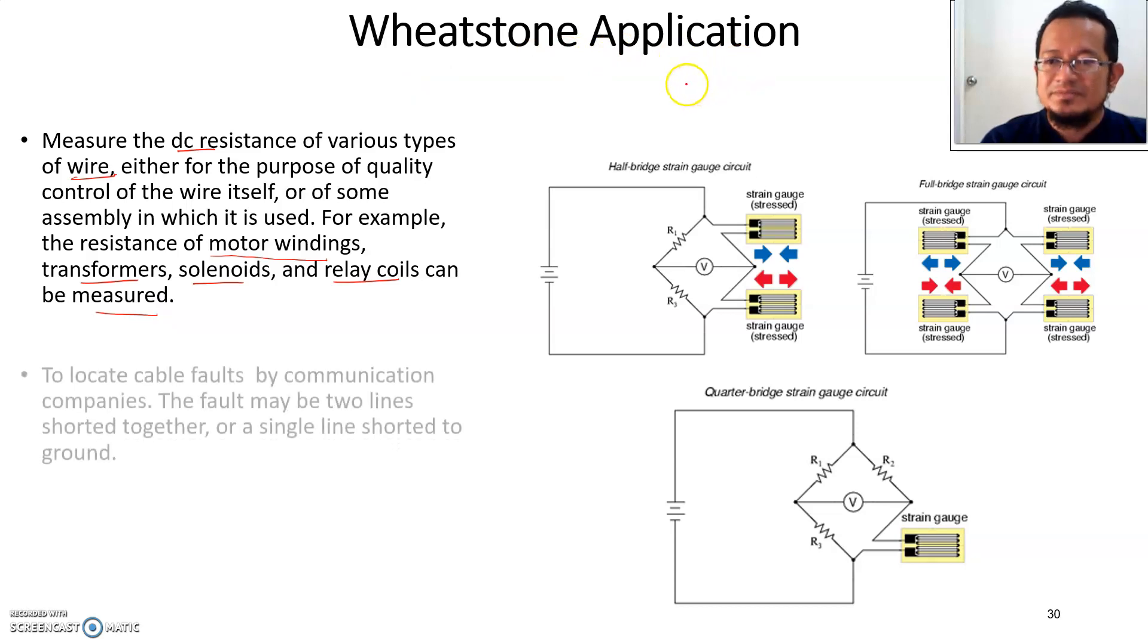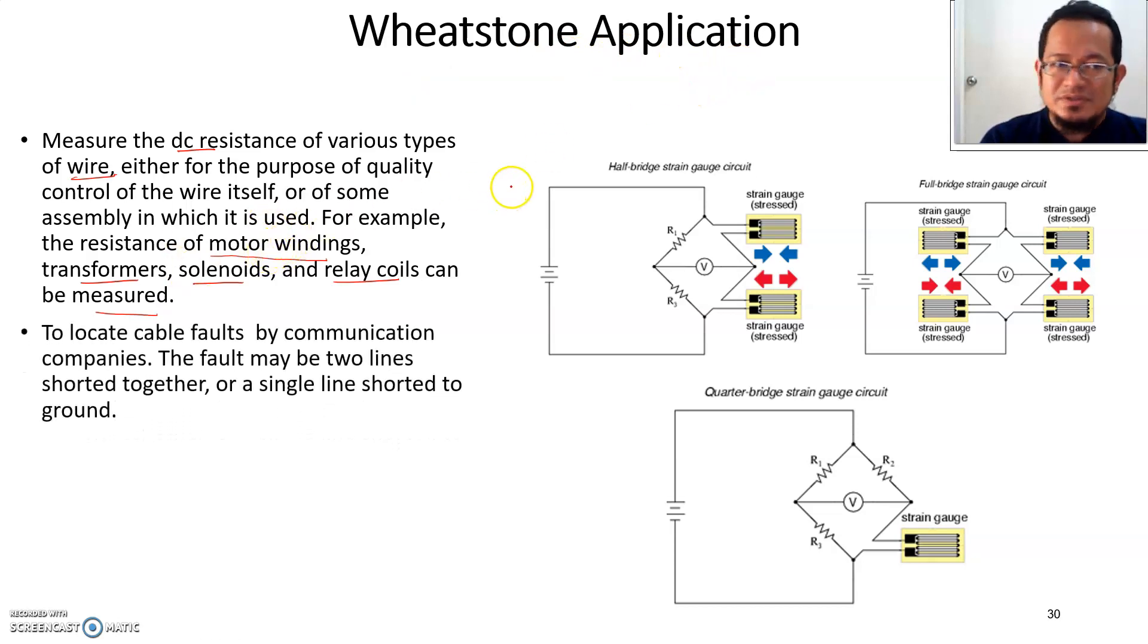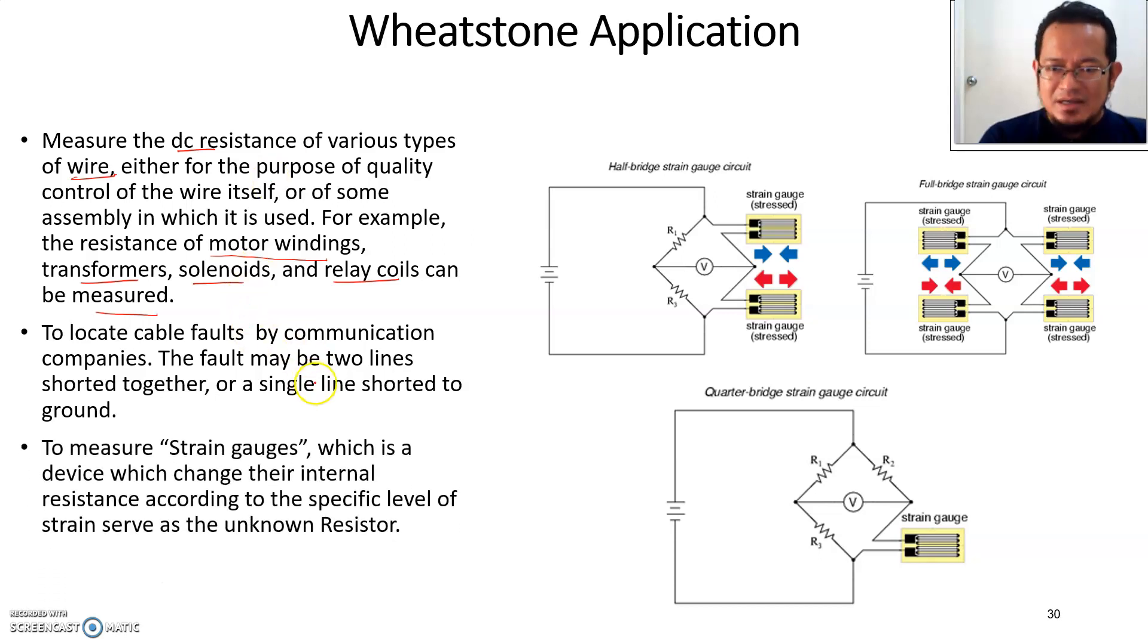The Wheatstone bridge can also be used to locate cable faults by communication companies. The fault may be two lines shorted together. The communication line has a certain resistance, maybe a few ohms for three kilometers. If you measure the wire using Wheatstone bridge and get a different value of resistance, then we can locate roughly where the short is in the communication line.